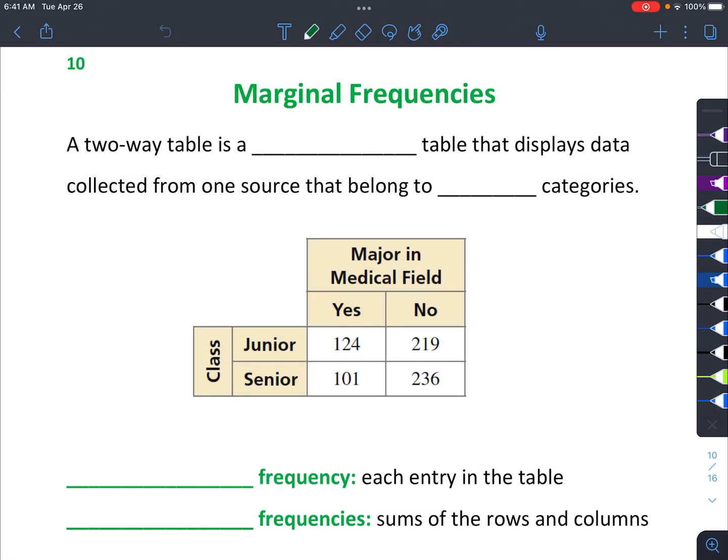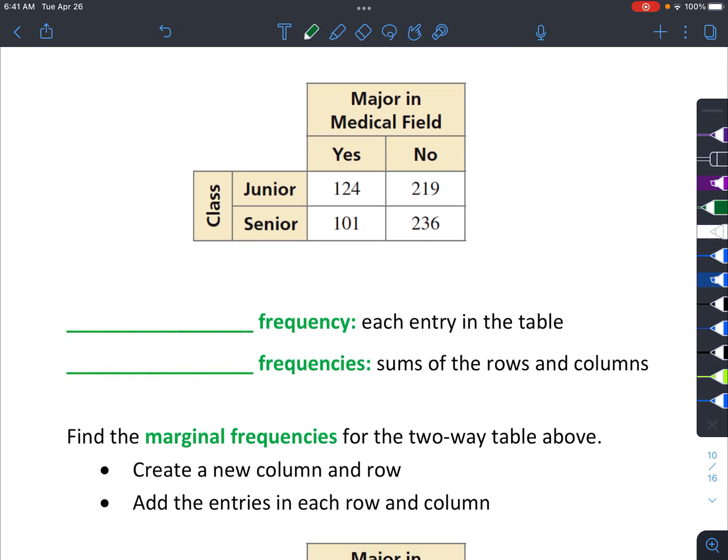Hello, today we're going to talk about marginal frequencies. First we're going to start off talking about two-way tables. The two-way table is a frequency table. It shows how many times something occurs that displays data collected from one source that actually belongs to two categories. It's just a nice way to display the information.